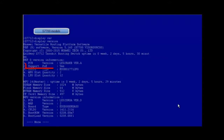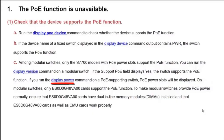Among modular switches, only the S7700 models with PoE power slots support PoE. You can run the display version command on a modular switch. If the support PoE field displays yes, the switch supports PoE. If you run the display power command on a PoE-supporting switch, PoE power slots will be displayed. On modular switches, only ES0D0G48VA00 cards support PoE. To ensure modular switches provide PoE power normally, confirm that ES0D0G48VA00 cards have dual inline memory modules installed and that the ES0D0G48VA00 cards as well as CMU cards work properly.